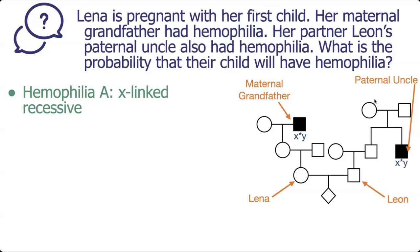Let's label the genotypes. The maternal grandfather on Lena's side and the paternal uncle on Leon's side are both X* Y, meaning they have that mutation. The question asks what is the probability the child will have hemophilia? For that to happen, the child has to be X* Y, or has to have two X mutations if the child is female. Let's take a look at what's possible.